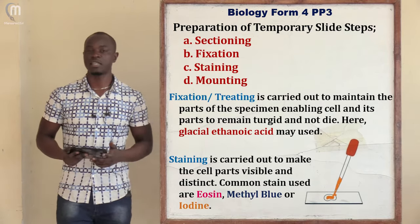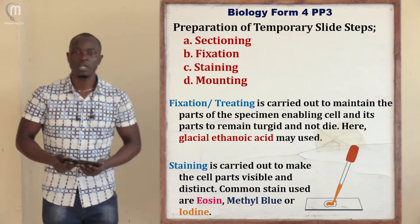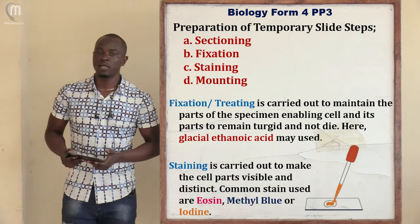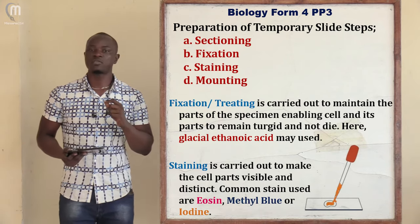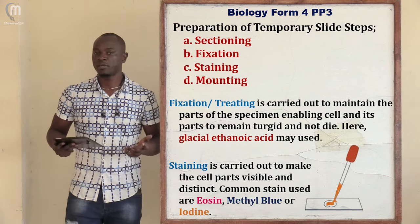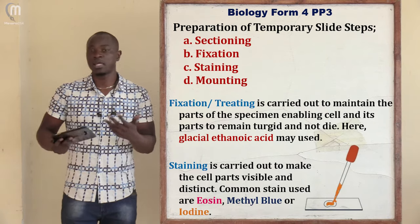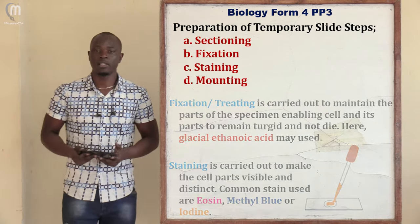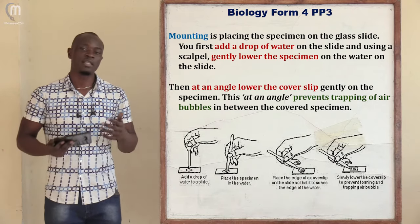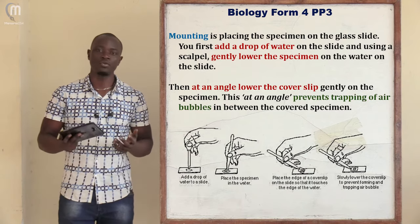After sectioning, the next step is treating — you add glacial ethanoic acid to the specimen in order to preserve its parts. After treating, the next step is staining. We stain the specimen so that the different organelles or parts can be visible and distinguishable. For staining, we can use iodine (which is brown), methyl blue, or eosine among others. The last procedure is mounting — placing the specimen on the slide and covering it with a cover slip.